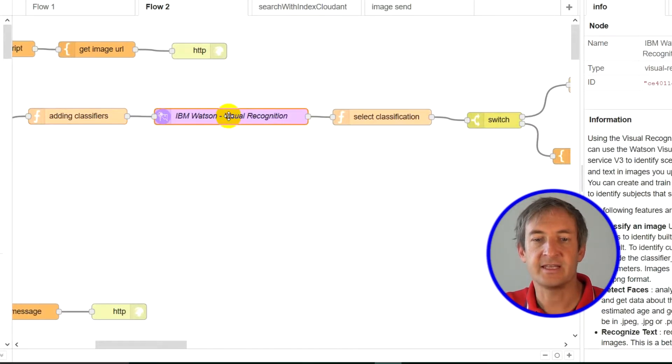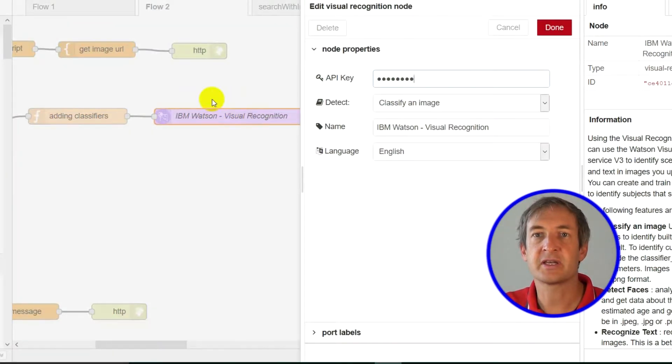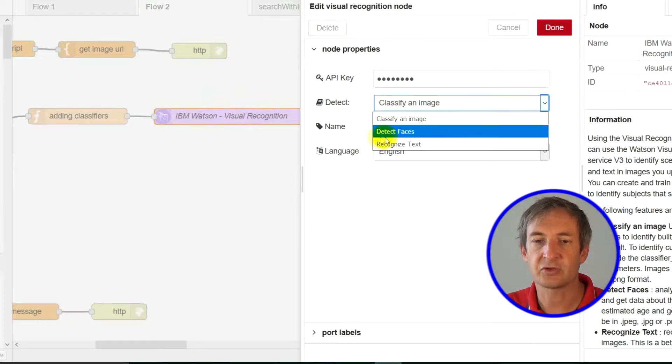Then, we get into the Watson visual recognition. And here, we can put the API key so that we point to the recognition that I own. And we decided to classify the image. And it's an English version. We can also detect faces or recognize text.